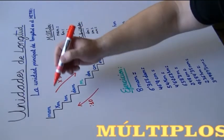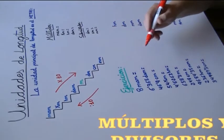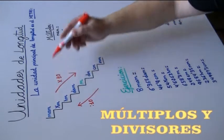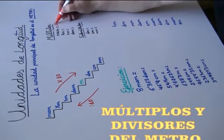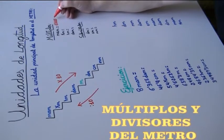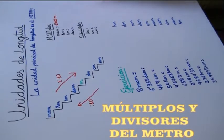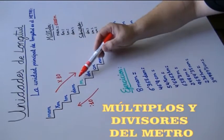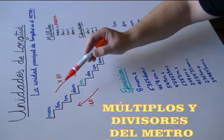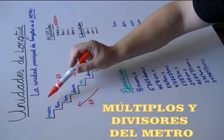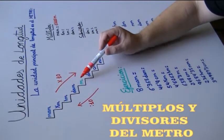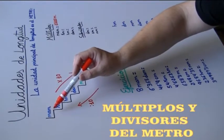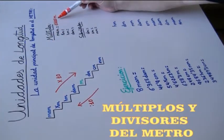Vamos a ver a qué son igual dichos múltiplos y divisores. Entre los múltiplos, comenzamos con el miriámetro. El miriámetro equivale a 10.000 metros. Estamos en el escalón del miriámetro y vamos a bajar hasta el escalón de los metros: 1, 2, 3 y 4 escalones. Un miriámetro por 10.000, porque son 4 escalones, será igual a 10.000 metros.